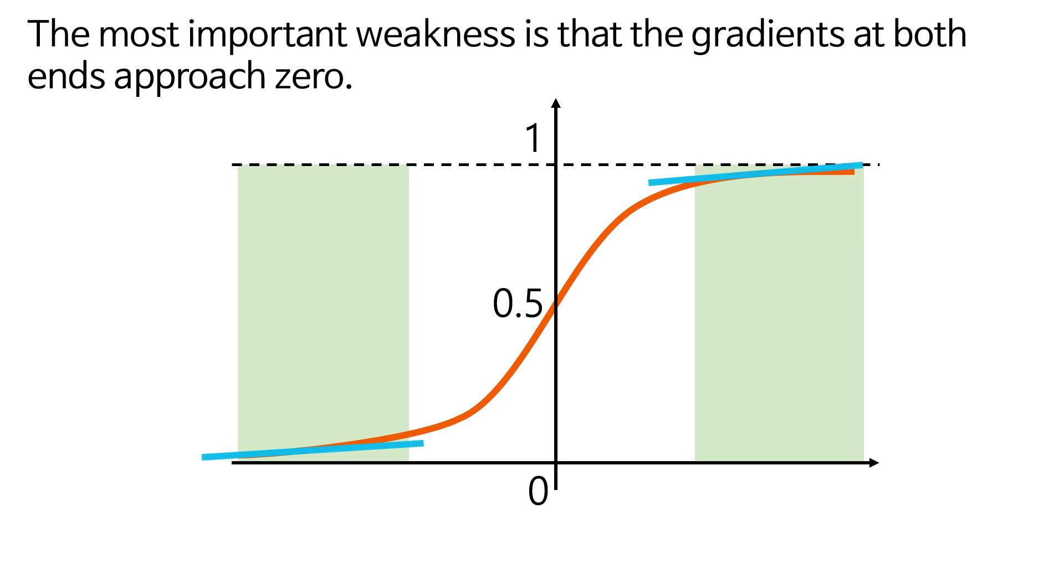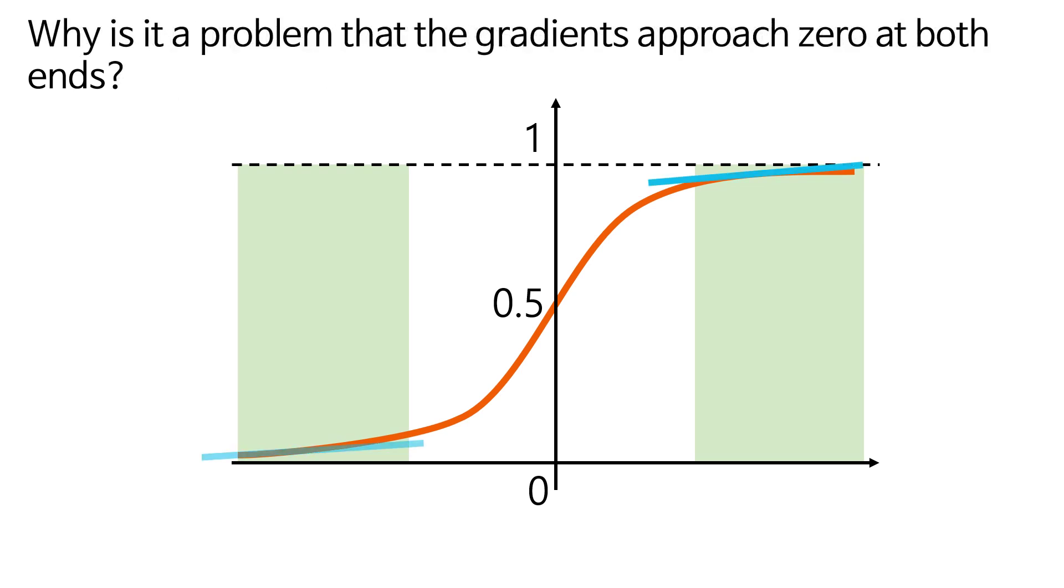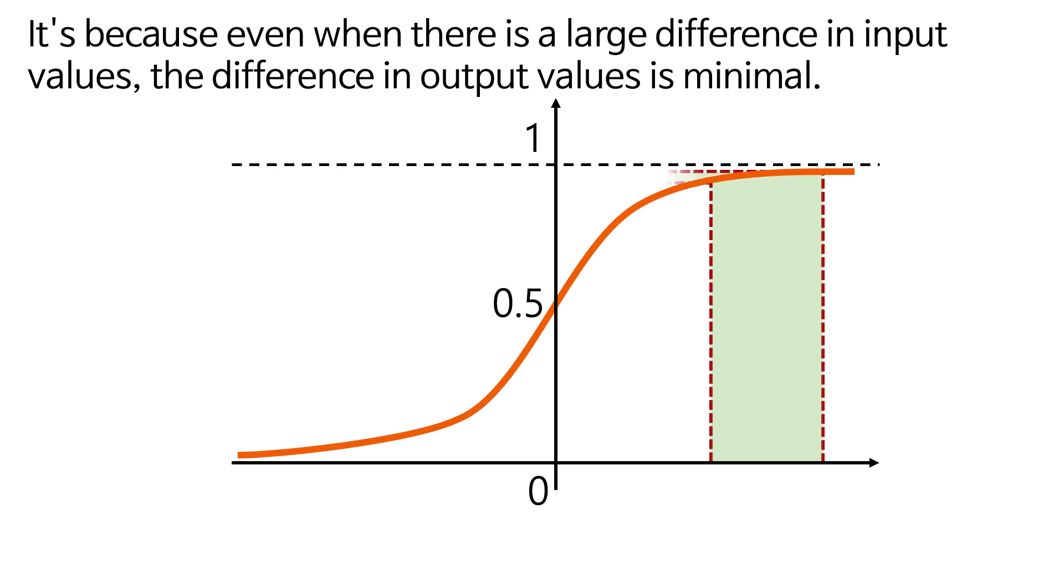The most important weakness is that the gradients at both ends approach zero. Why is it a problem that the gradients approach zero at both ends? It's because even when there is a large difference in input values, the difference in output values is minimal.